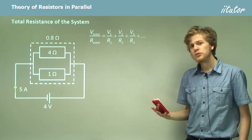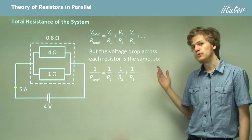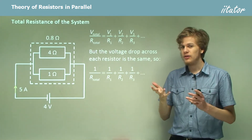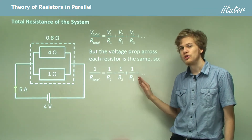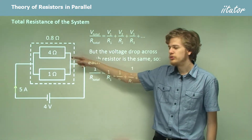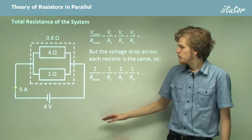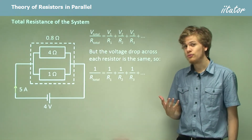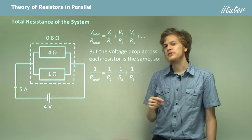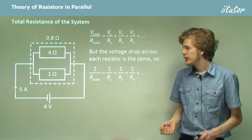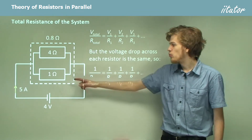Since the voltage drop across each resistor is the same — V total equals V1 equals V2 — dividing both sides by V gives us: 1 over R total equals 1 over R1 plus 1 over R2 and so on. Applying this equation to these resistors, their total resistance must be 0.8 ohms. The 4-volt power supply puts out a 5-amp current, so if V equals 4 and I equals 5 then R must equal 0.8 to satisfy Ohm's law.